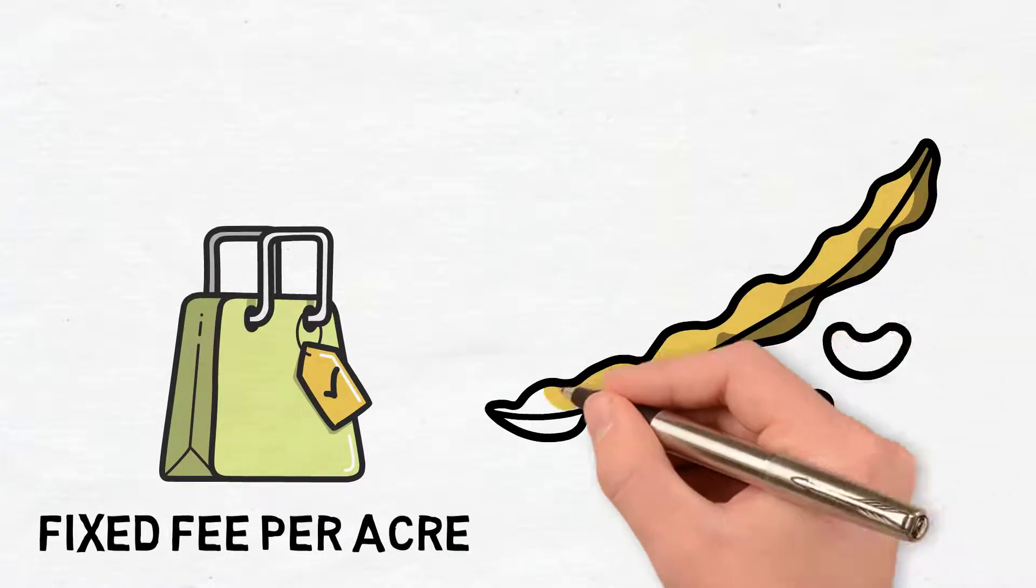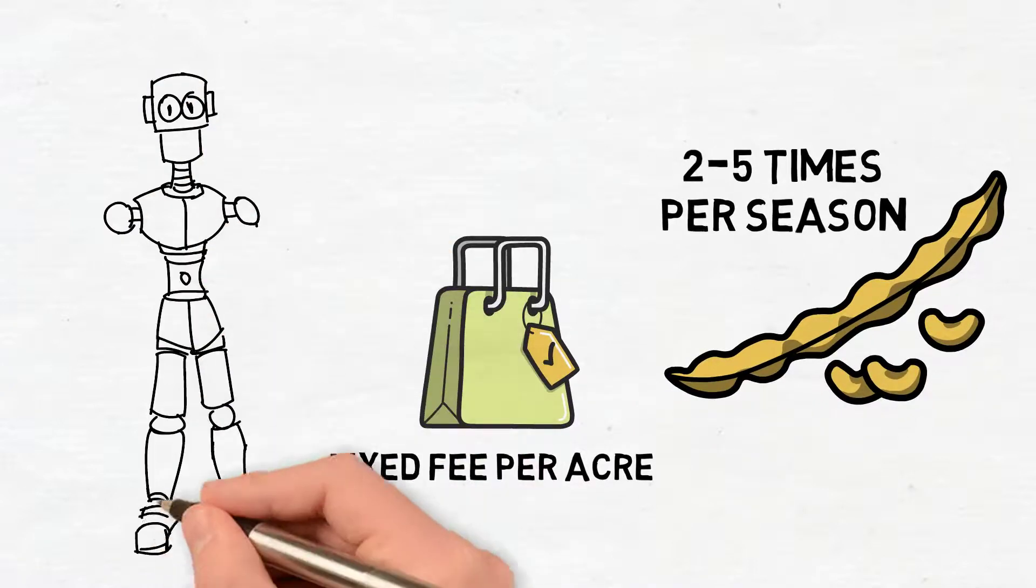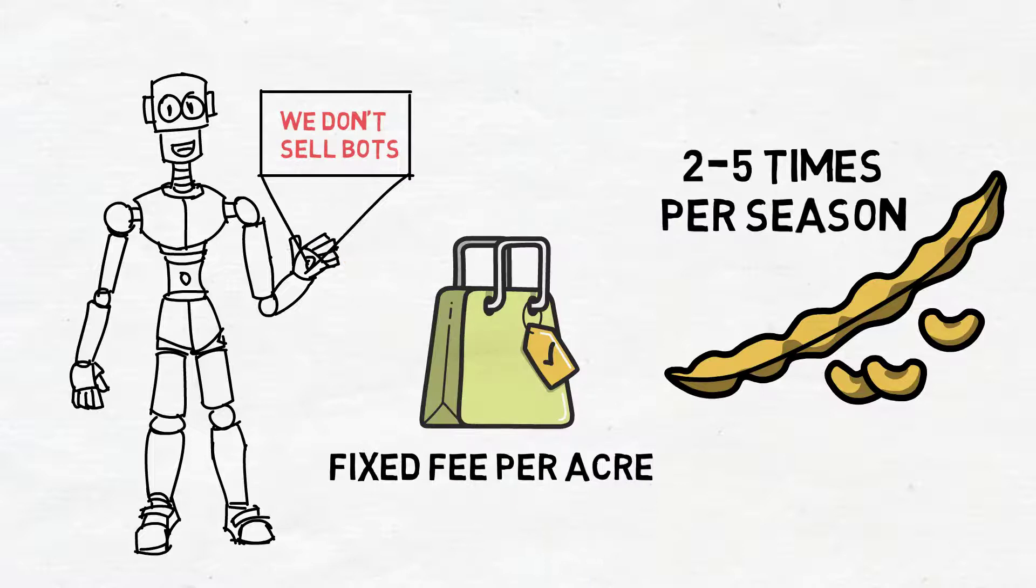So we figure on soybeans, we're going to be out there two to five times per season. That is the way it works currently. And we don't sell the bots directly to folks right now.